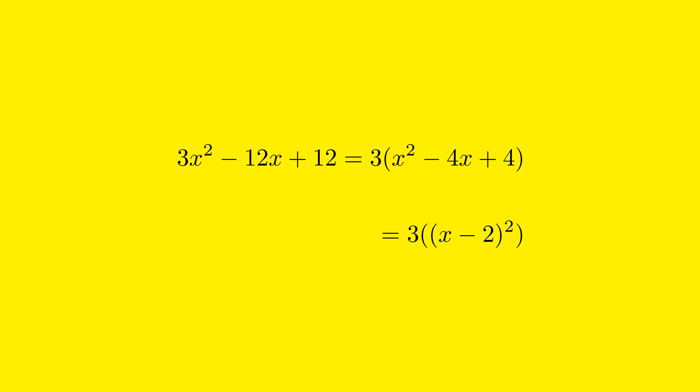The final factorized form of the original equation 3x² - 12x + 12 is 3(x - 2)².